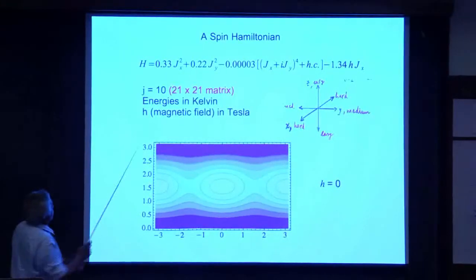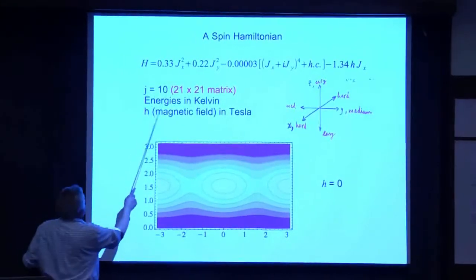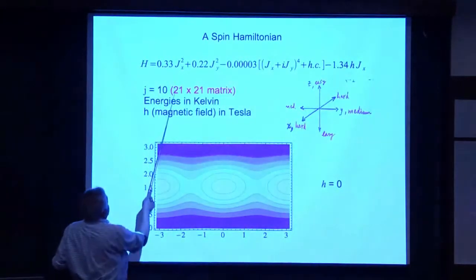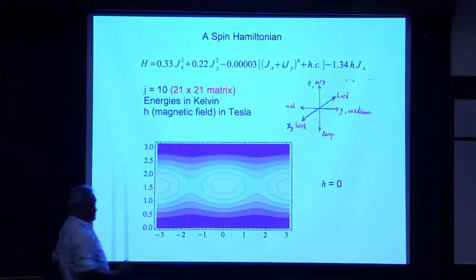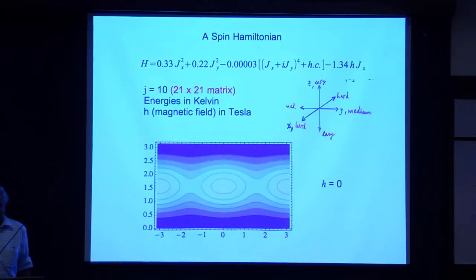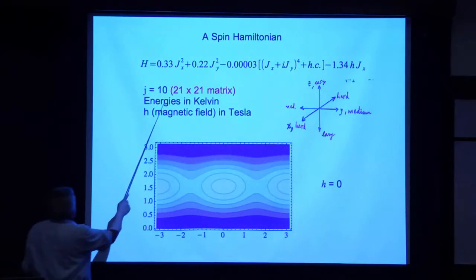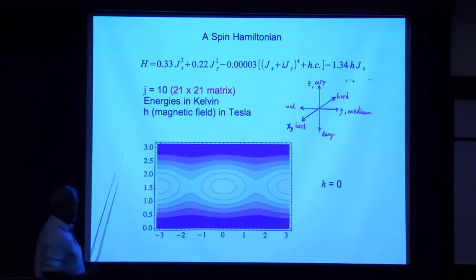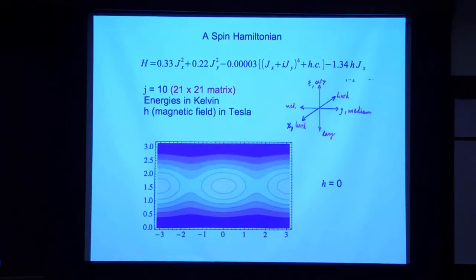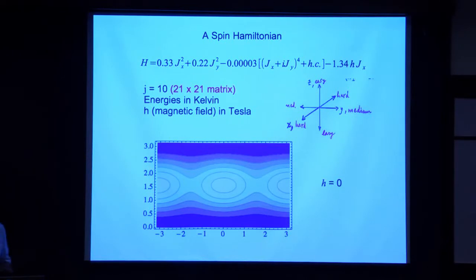The magnitude of this spin is 10, which means that if you want to think of it as a matrix, it's just 21 by 21 — that's 2j plus 1. However, J equals 10 is pretty large, so it's also not a bad idea to think of this spin as a classical vector.